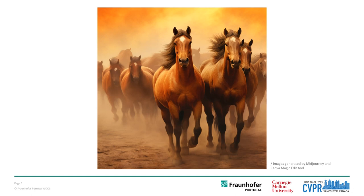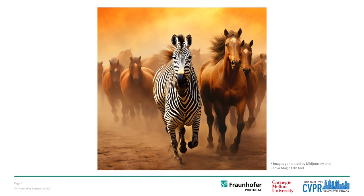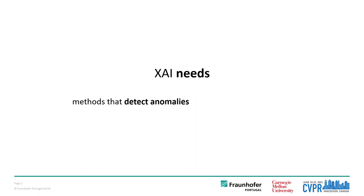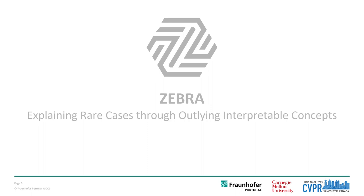When we hear hoofbeats, we naturally think of horses — but what if we find an anomaly, a zebra among horses? How can we explain this rare case? The current state of explainable AI highlights the need for methods that detect anomalies but also explain them in an understandable way that incorporates users' domain knowledge. Here comes ZEBRA, a novel framework.